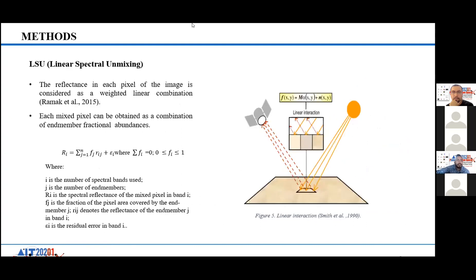Linear spectral unmixing considers the reflectance in each pixel of the image as a linear combination. Each pixel can be expressed as a combination of endmember fractional abundances, and the spectra reflected in the mixed pixel are calculated applying this equation.